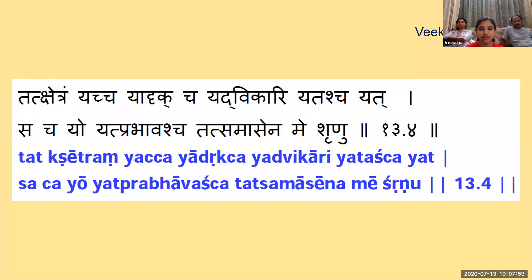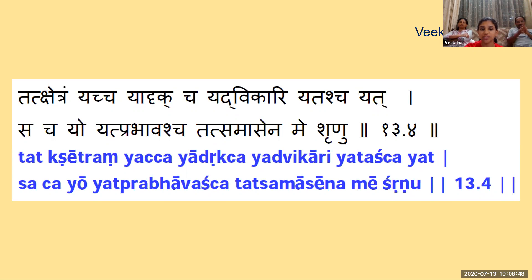With regards to the Kshetra, the field, it is important to learn about what it is, what are its characteristics, how it undergoes modifications and what is its true source. With regards to the knower of the field, the Kshetrajna, we also have to learn what it is, what are its powers and what are its effects. This is the theoretical aspect of this chapter. Krishna takes up questions like: What is Kshetram? What is its nature? What are the causes out of which various effects are born? What is Kshetrajna and what glory is it? This verse creates kutuhala — curiosity — in the mind of Arjuna to thoroughly understand these important terms.